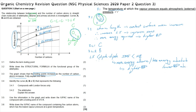Question 3.5: use the information in the graph and write down the IUPAC name of the compound with the boiling point of 373 kelvin. Reading off the graph, there is only one compound with a boiling point at 373 kelvin, and that compound is on graph B — therefore an aldehyde — containing four carbons. Four carbons gives the prefix 'but-' and it is an aldehyde, giving the suffix '-al', so the answer is butanal.